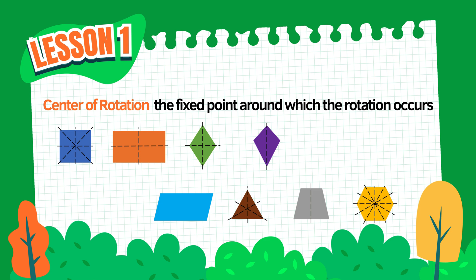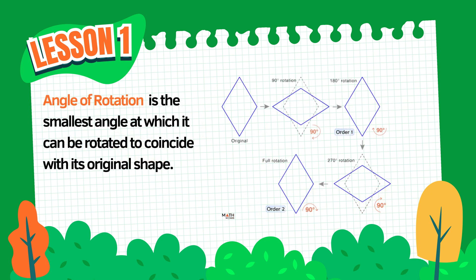Let's talk about the angle of rotation. The angle of rotation is the smallest angle at which a shape can be turned or rotated so that it looks exactly the same as it did before. This happens in shapes that have rotational symmetry. Now let's look at a rhombus.